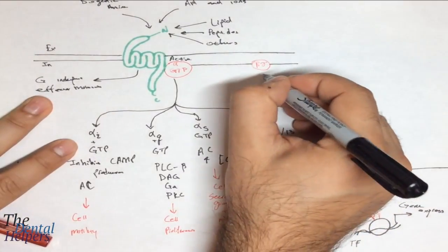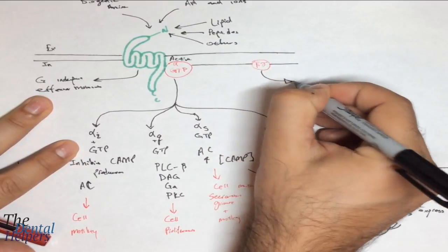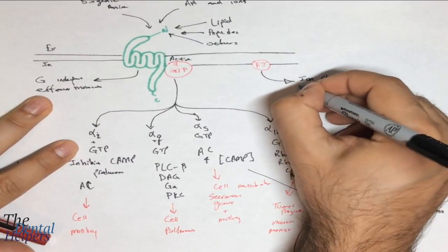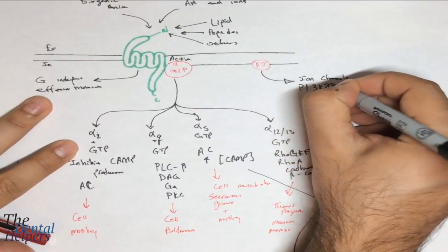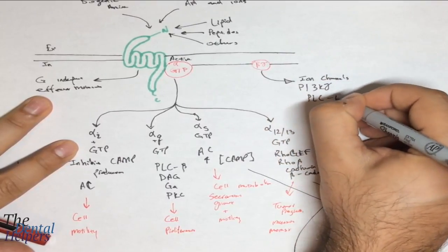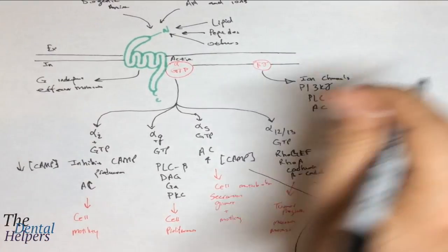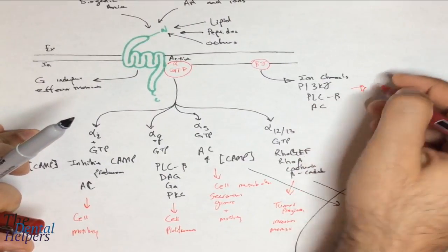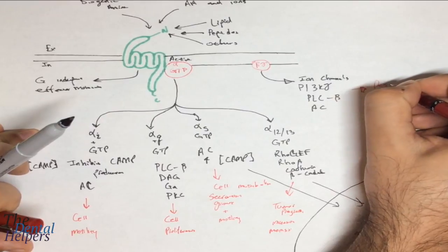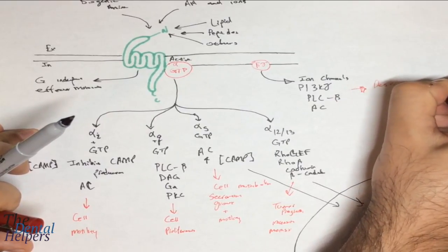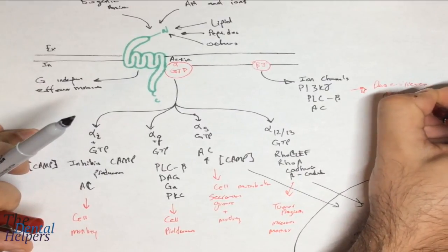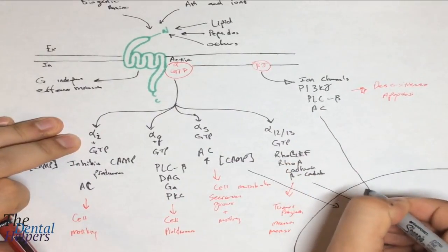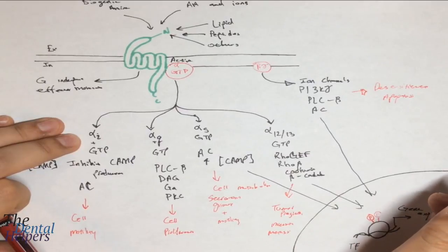Lastly, we have the beta-gamma subunits. Beta-gamma is going to be impacted by ion channels, specifically potassium, PI3K-gamma, PLC-beta, and adenyl cyclase. What these are involved in is desensitization and apoptosis. These groups are actually going to go into the nucleus as well, and they're also going to impact gene expression and regulation.